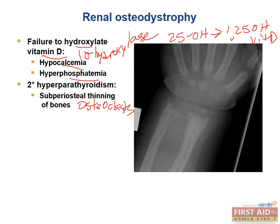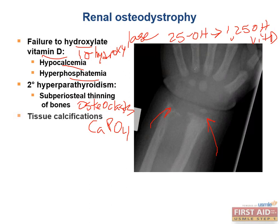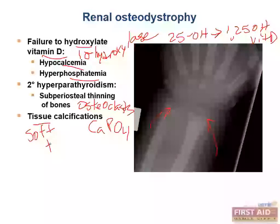Looking at this patient's wrists, we can see the fraying and thinning of the radial and ulnar metaphyses due to bone reabsorption. The hyperphosphatemia leads to tissue calcification because it causes calcium to precipitate as calcium phosphate in soft tissues — remember, this tissue calcification is occurring in soft tissues.